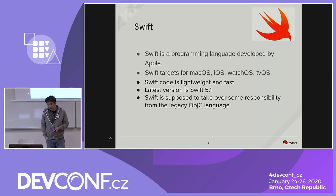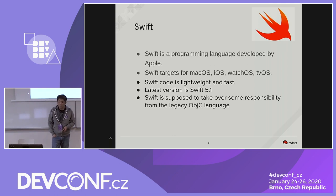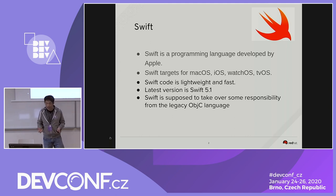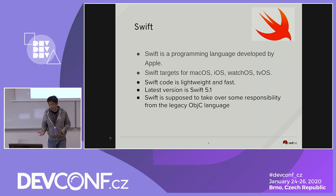Swift is a programming language developed by Apple. Swift targets mostly macOS, iOS, watchOS, and tvOS. Swift is really lightweight and fast — super fast. The latest version of Swift is Swift 5.1.